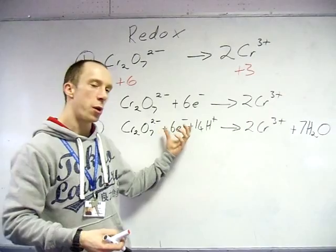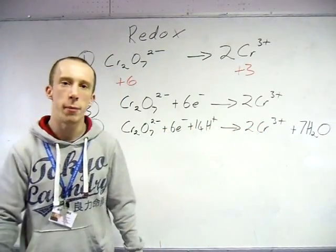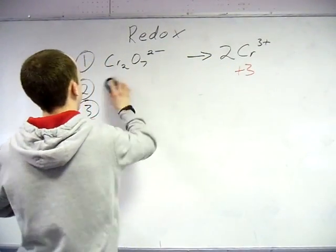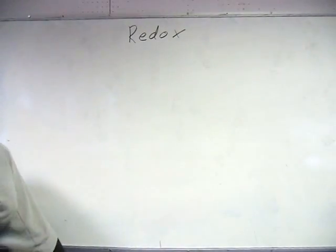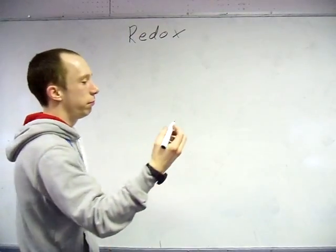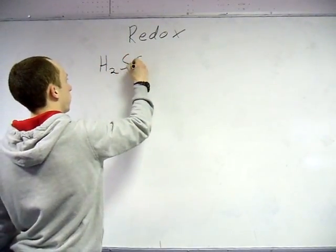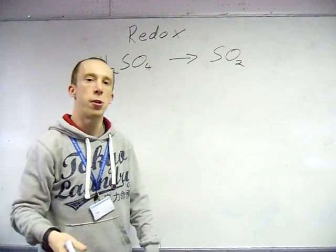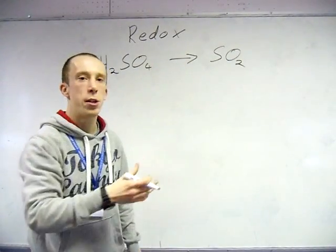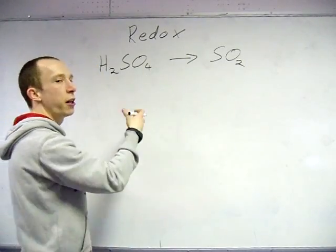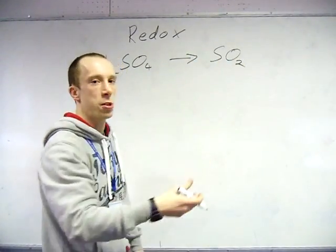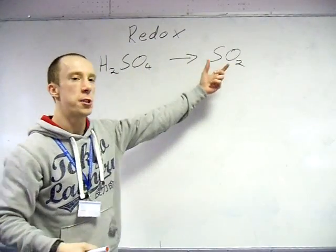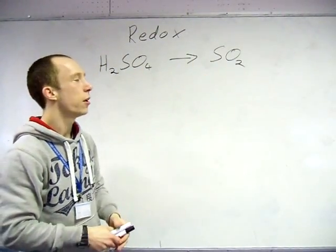So this is your half equation. It should have electrons on one side, no electrons on the other. So I'll do an example now which you may not have seen. Sulfuric acid converting to sulphur dioxide. So in the exam they will tell you your start and end product. So they'll tell you sulfuric acid converting to sulphur dioxide. So again work through the steps. Ignore the oxygens and hydrogens. Balance them at the end. So sulphur is first. Are the sulphur balanced? Yes.